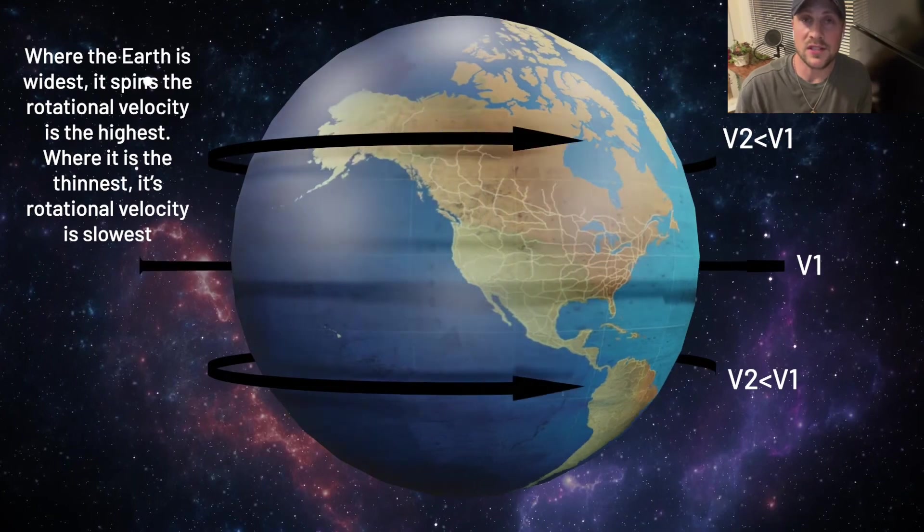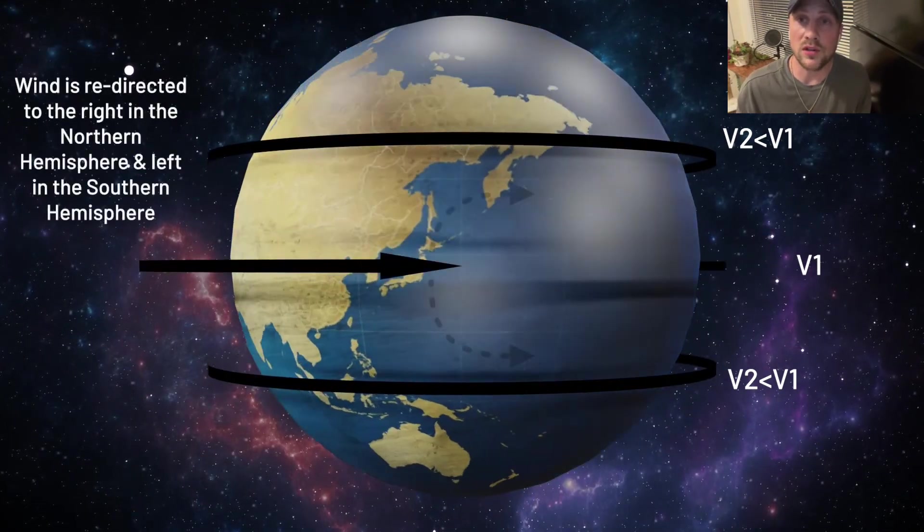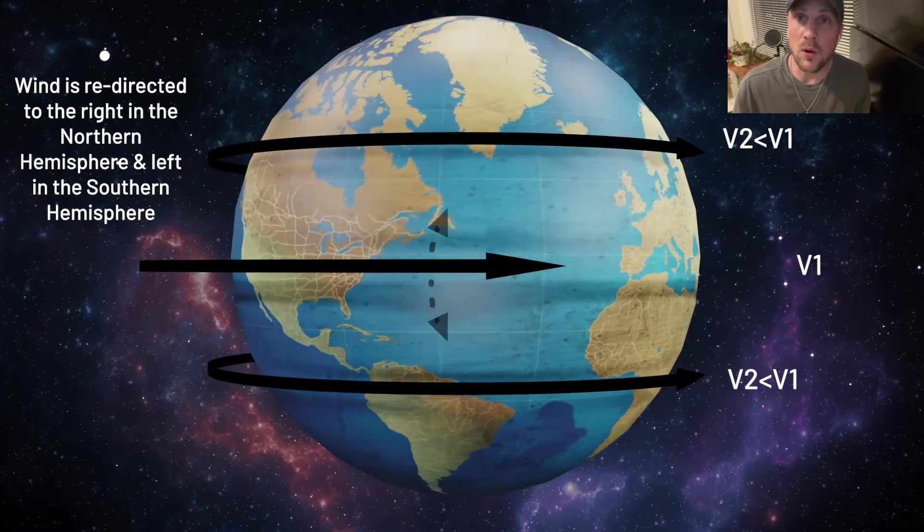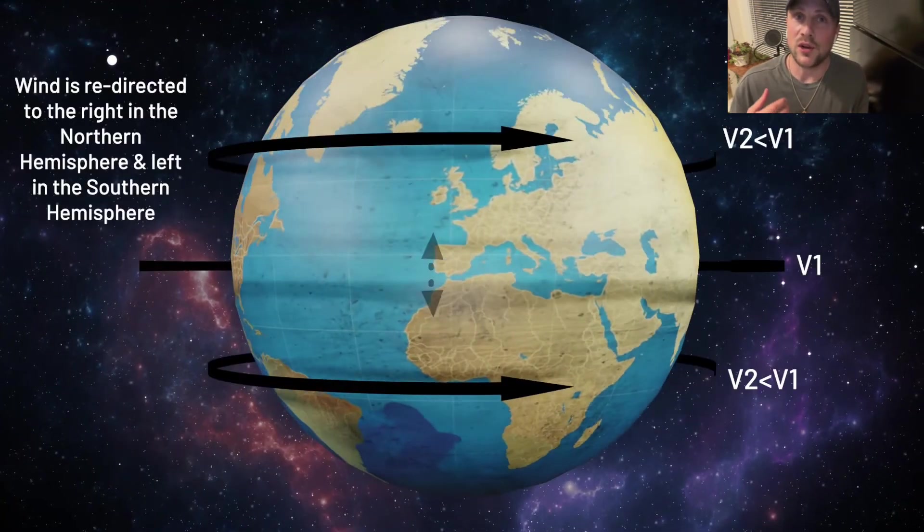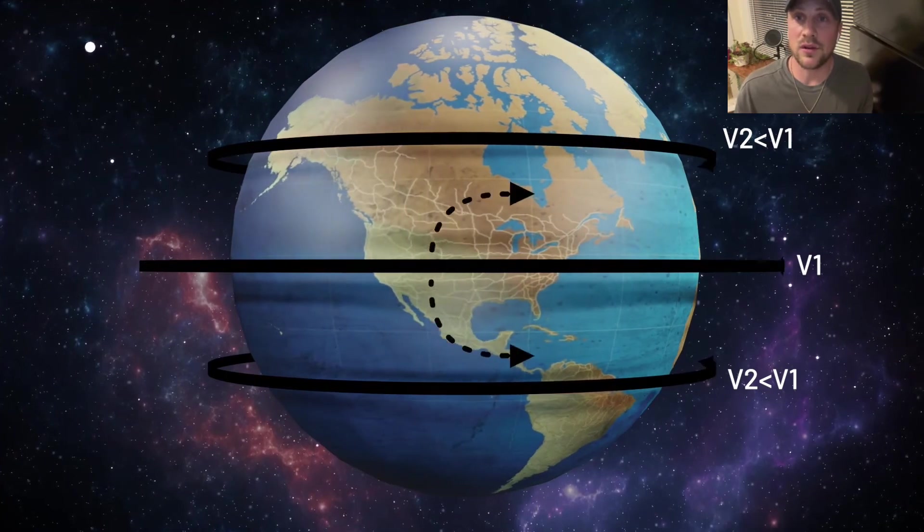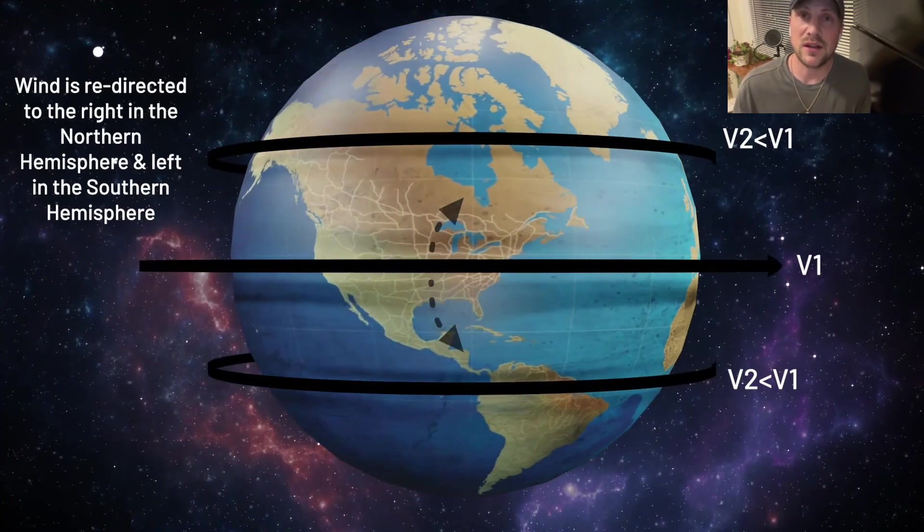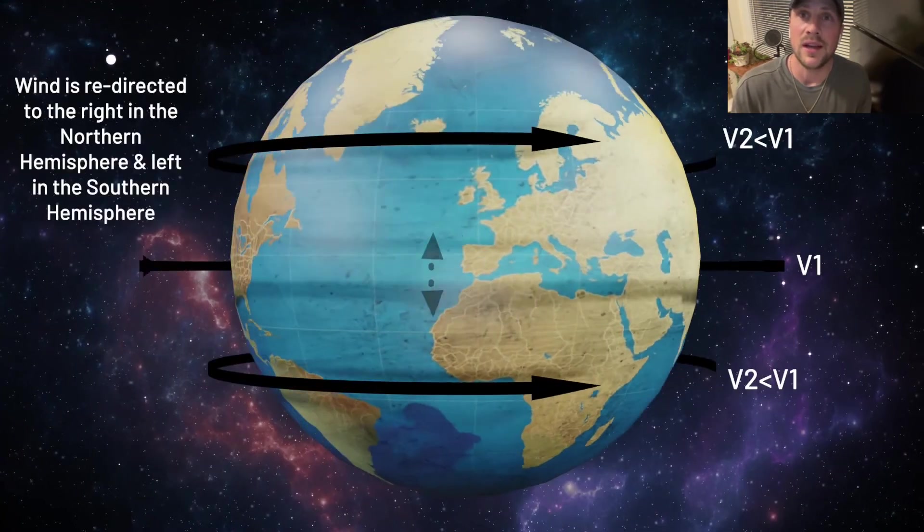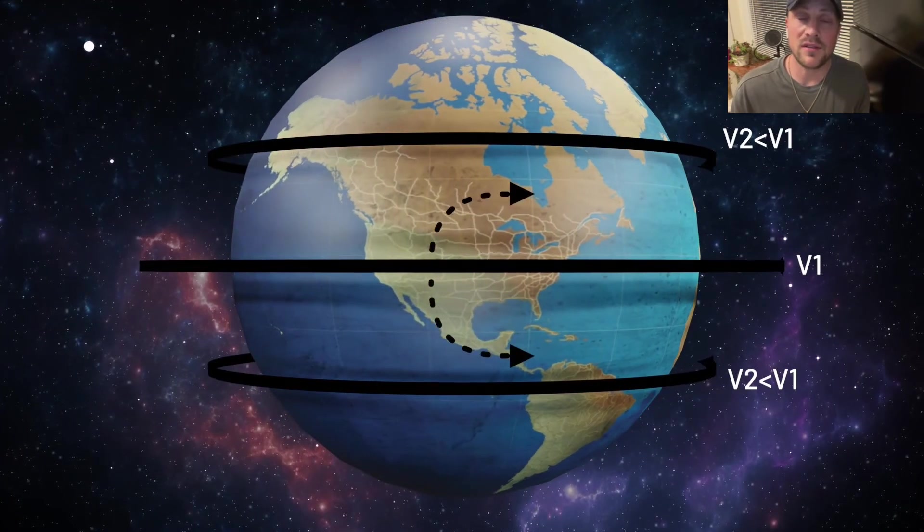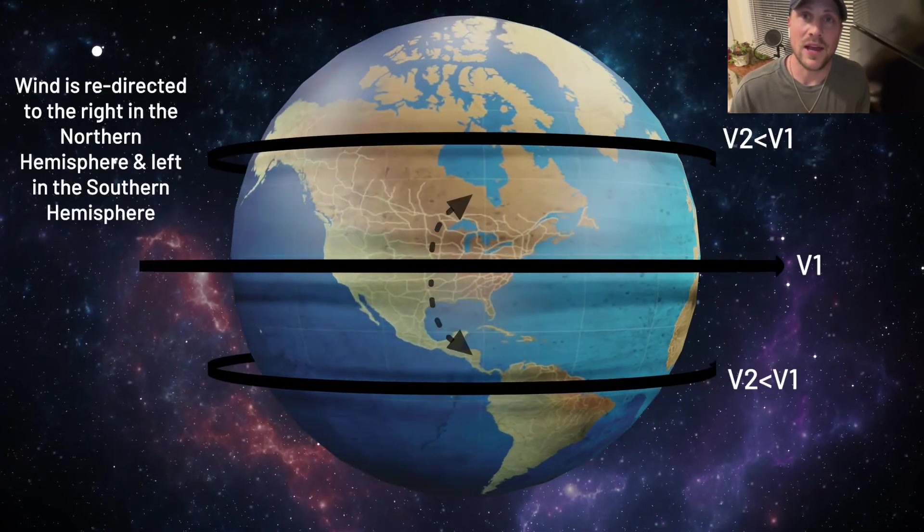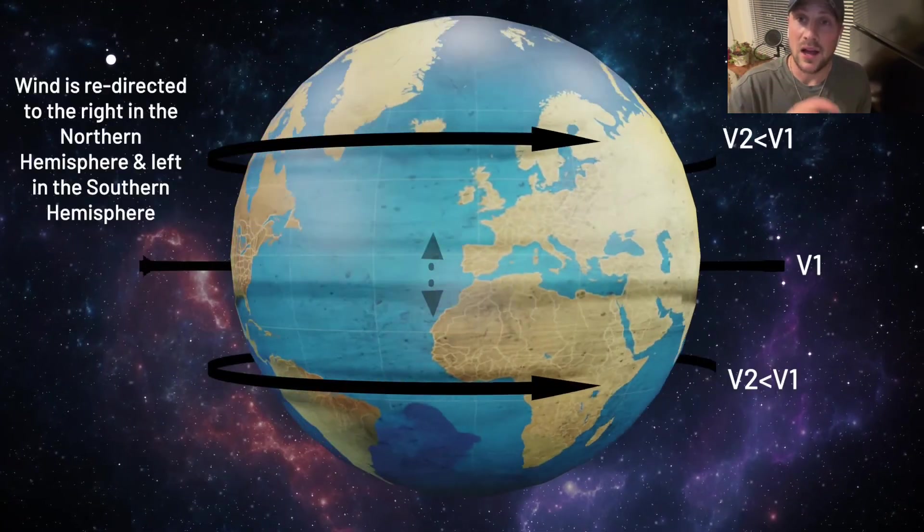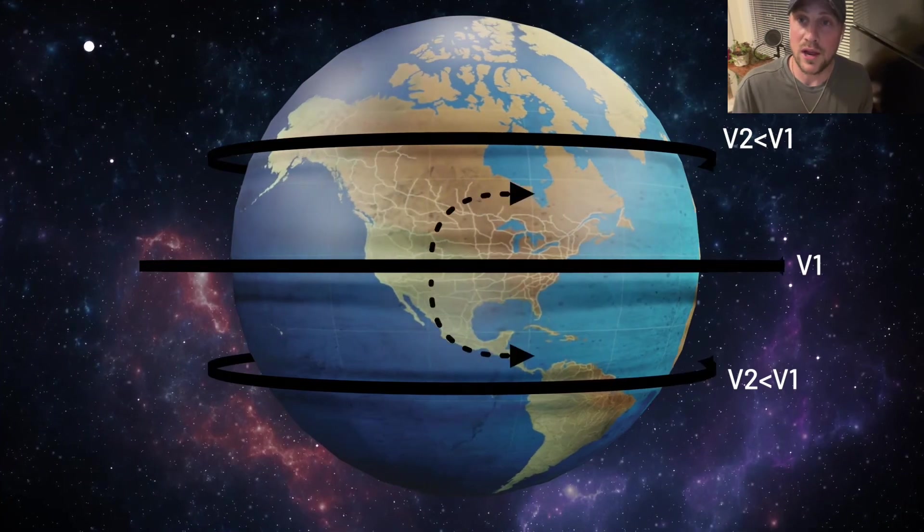Because of this, if wind was traveling outwards from the equator, air is traveling from the equator to the north or south pole, it would actually get redirected to the right in the northern hemisphere and to the left in the southern hemisphere. Because as it travels further away from that equator, the rotational velocity of the earth is actually slowing down.